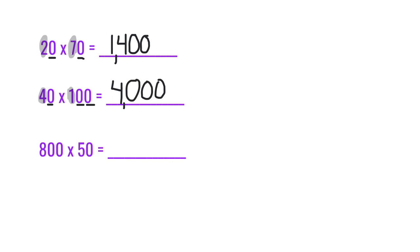And our last one is a little tricky because our basic fact of 8 times 5 already has a zero. 8 times 5 is 40. Then we have to add an extra 1, 2, 3 zeros to our product. So we get 40,000.